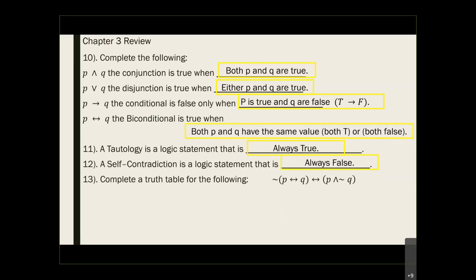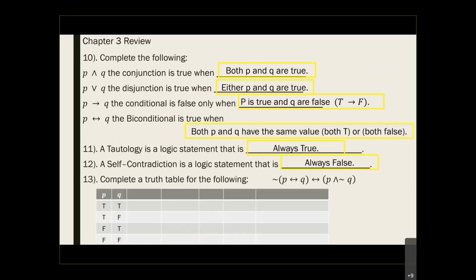I wanted to get to the truth table to remind you what to do. To construct the truth table, remember this is your fixed truth table: P is true, true, false, false and Q is true, false, true, false. Every time we have two letters, this is our fixed truth table.